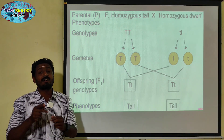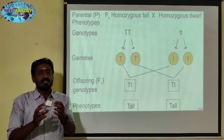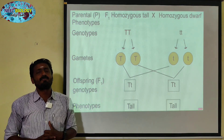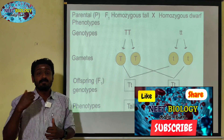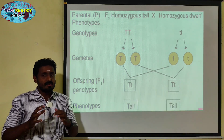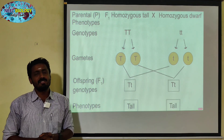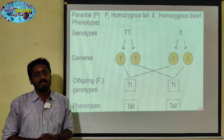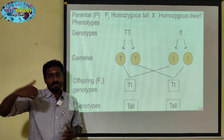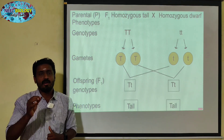Among the two forms of a gene, one is expressed as dominant and the other is recessive. The character that is expressed is called dominant, and the one that is masked is called recessive.